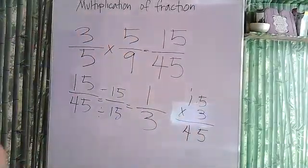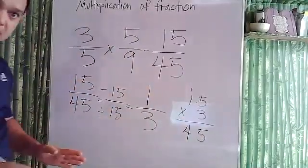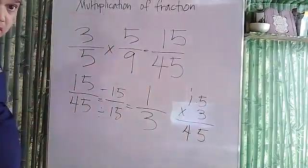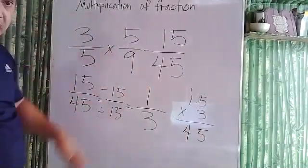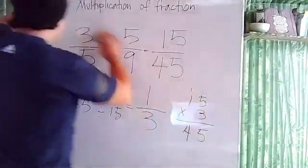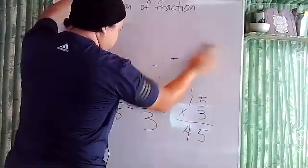So let's divide: 15 divided by 15 is 1, and 45 divided by 15 is 3. So one-third is our final answer. That's how you multiply fractions - multiply the numerator and multiply the denominator, and simplify the answer if possible.